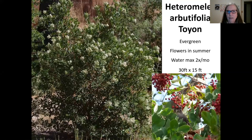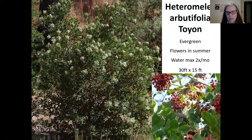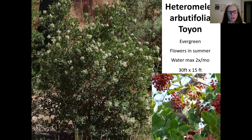The toyon, also known as holly berry, blooms in the spring with small white flowers and has beautiful red berries in the winter, which are great for decorating and which birds love. Unripe berries do have a toxin, so it's not recommended for human consumption. Water twice a month; it can get 30 feet tall and about 15 feet wide. This is one you can prune to any size and build a hedge out of as well.